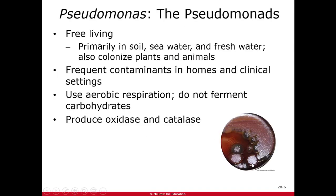We're going to start with our aerobic bacteria — the Pseudomonas. There's more than one species of Pseudomonas. They are found in soil, in water, around plants, in animals, in homes, and in clinical settings. They are strictly aerobic and require oxygen for survival. They don't ferment carbohydrates. They do produce the enzyme oxidase and the enzyme catalase, just like some of the staph bacteria.